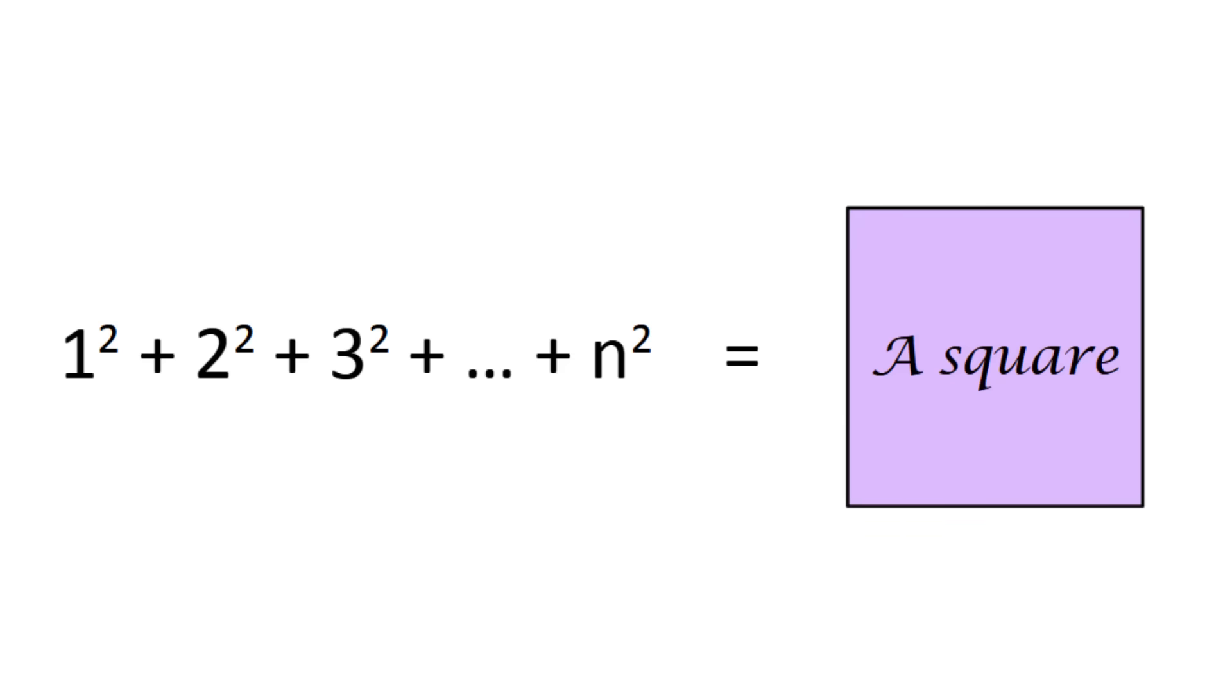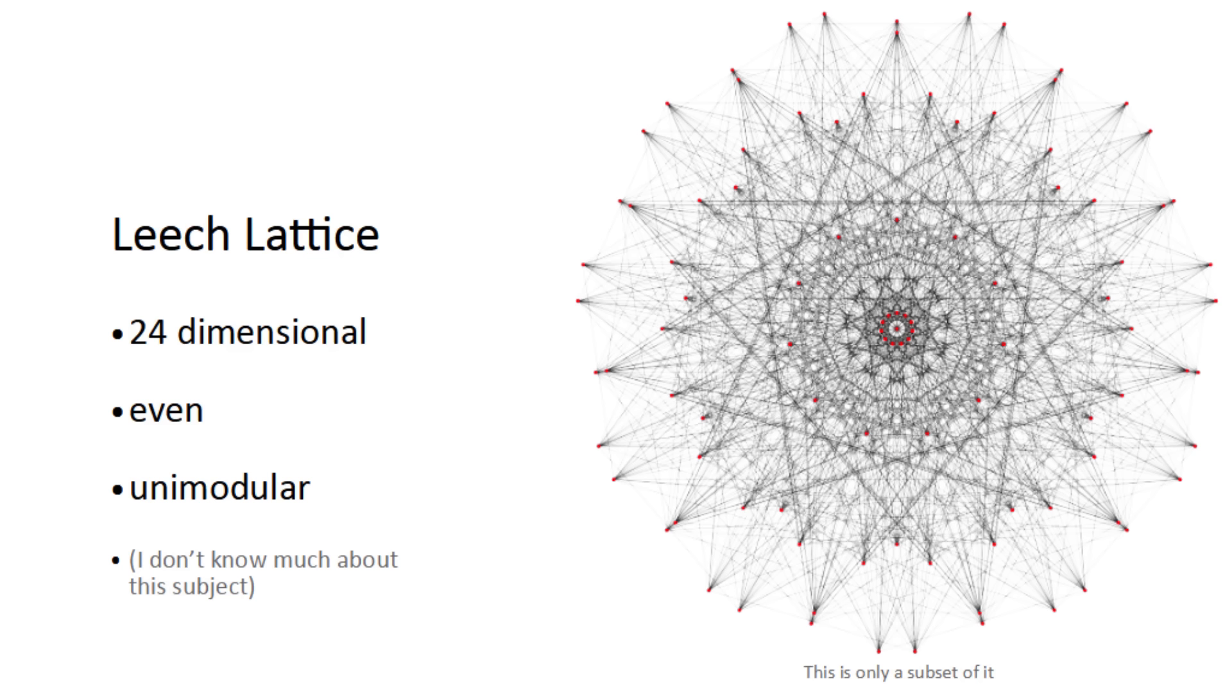Obviously 1 works, but other than that, there's exactly one solution. The sum of squares from 1 to 24 is exactly 70 squared. This property actually allows you to construct the 24-dimensional even unimodular Leech lattice.